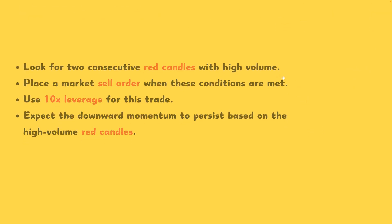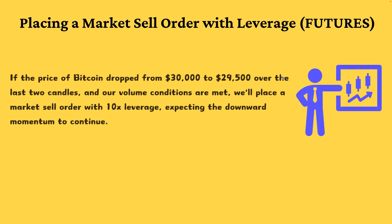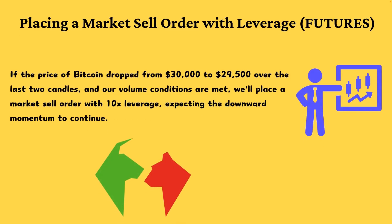If the price of Bitcoin dropped from $30,000 to $29,500 over the last two candles and our volume conditions are met, we'll place a market sell order with 10x leverage, expecting the downward momentum to continue.